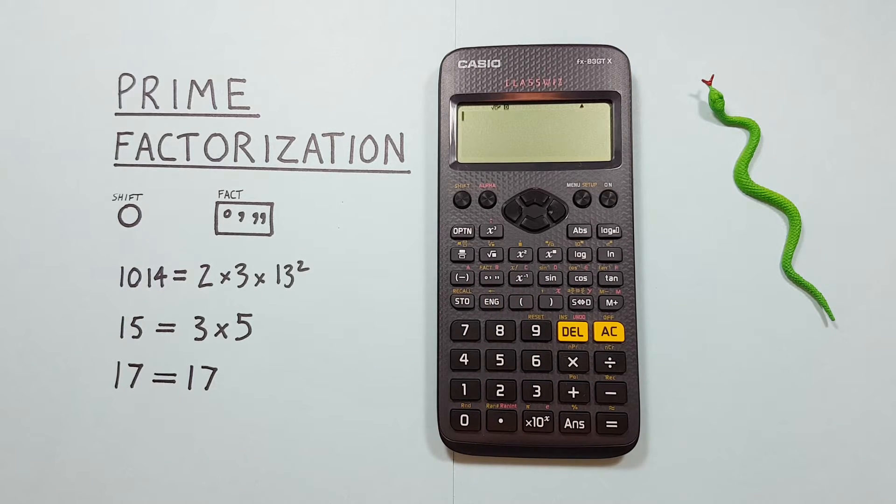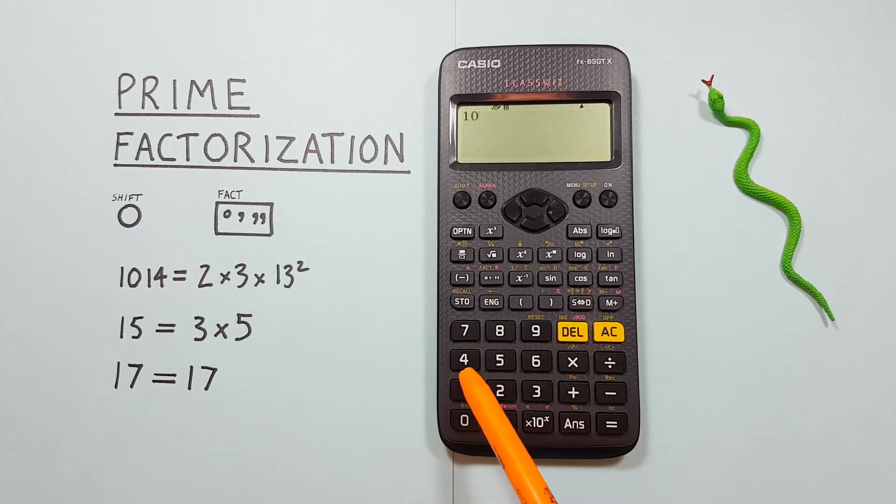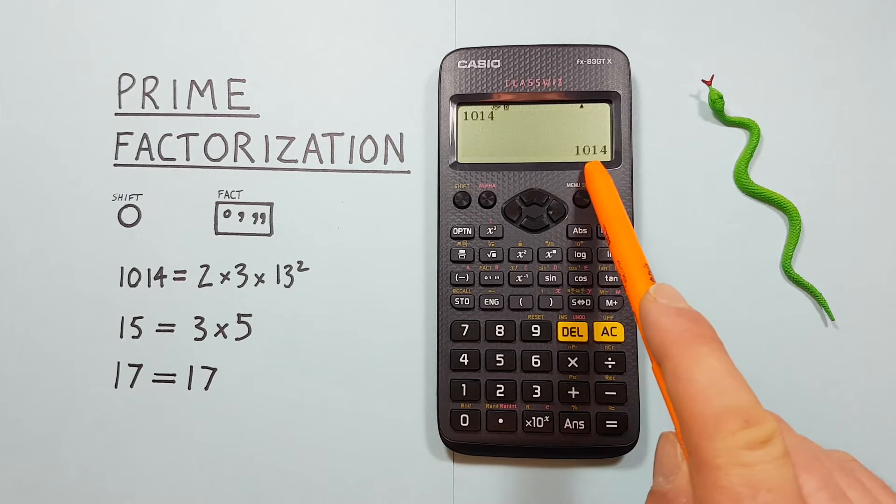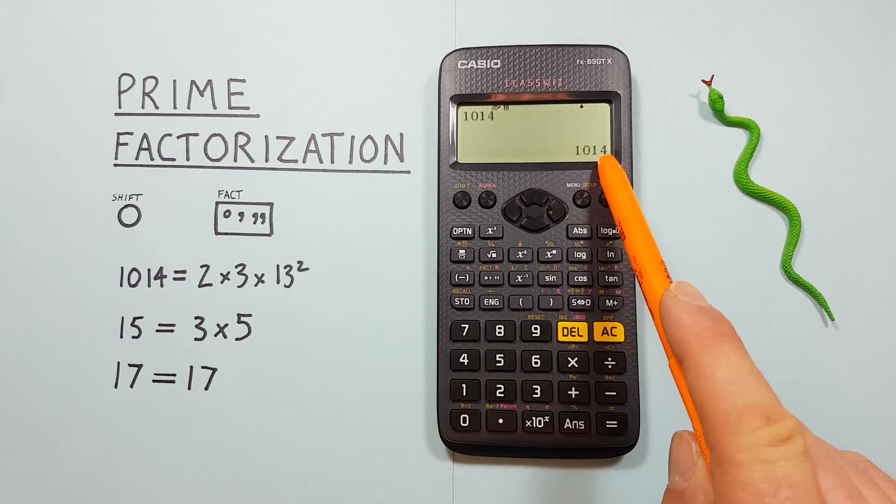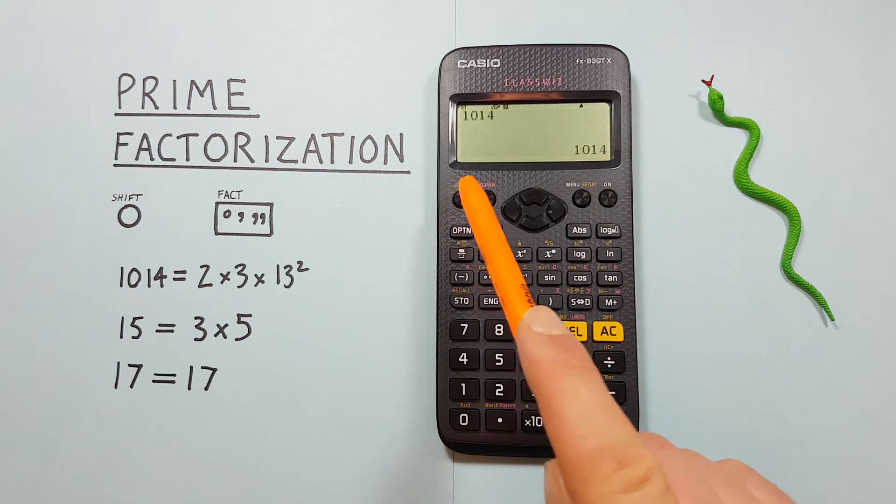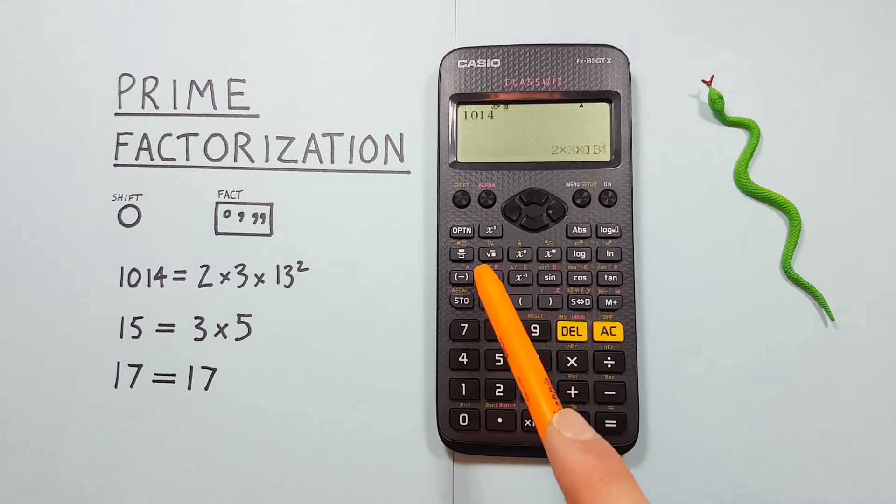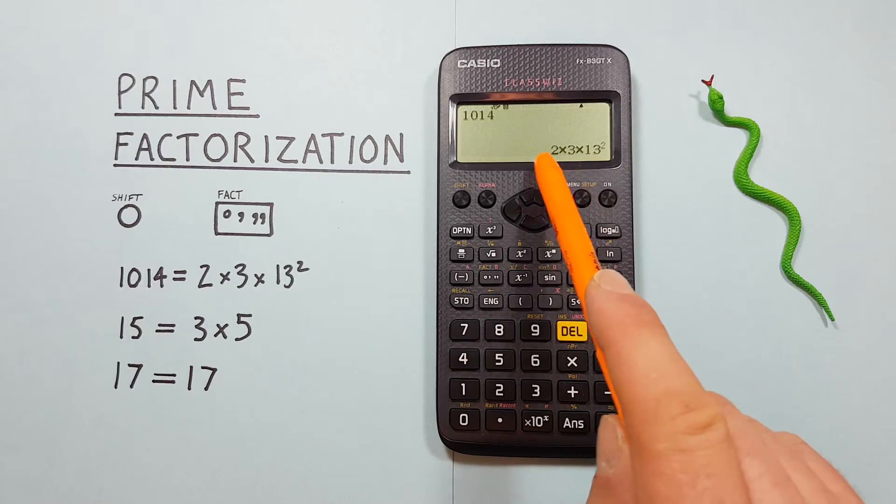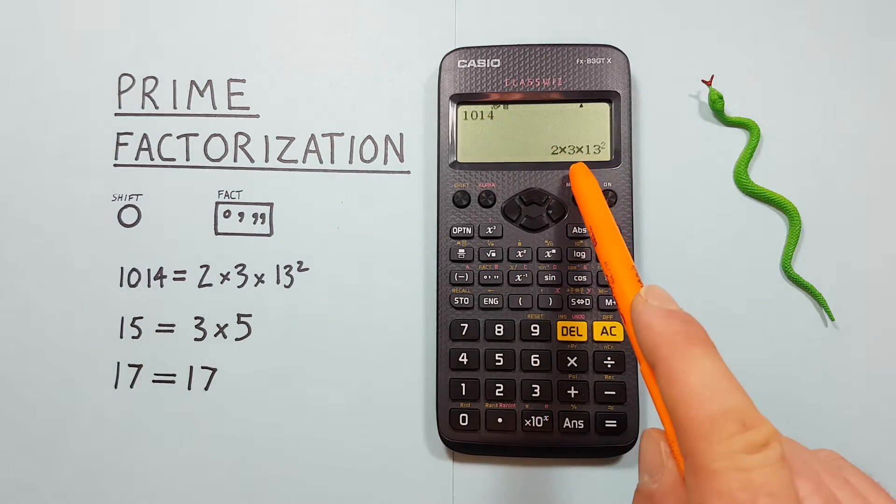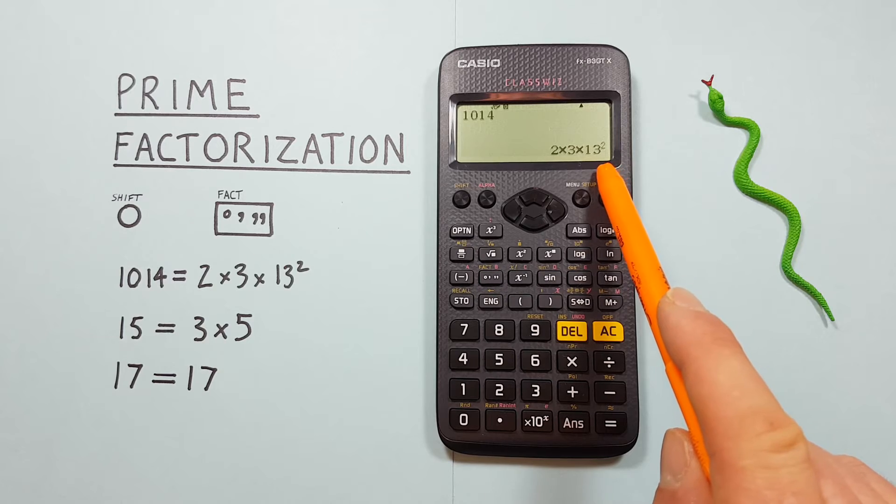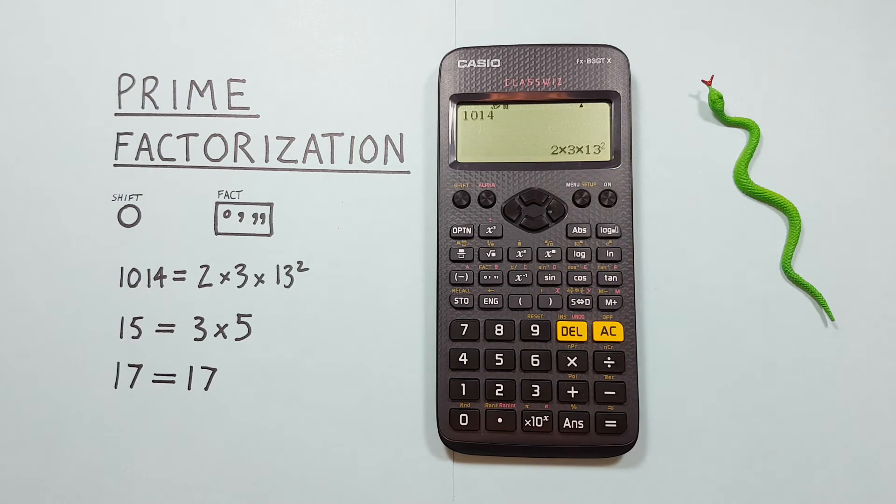For our first example, if we wanted to find the prime factors of 1014, we would start by entering it on our screen and then press equals so that it's down here in the bottom right. Then we would press our shift factor key and we see that 1014 has converted to 2 times 3 times 13 squared, which are our prime factors for this number.